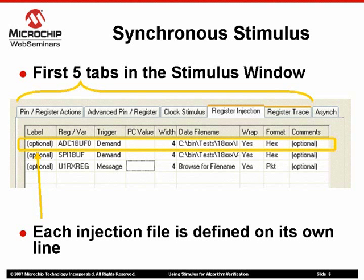In this diagram we are focused on the register injection tab, which shows three register injection stimulus definitions. The first column is an optional label, which must not be the same as any symbols within the source code. The next field is the register or symbol — that is, the variable name — that data will be injected into. Following that is the type of trigger, which can be Demand, Message, or PC Equals.